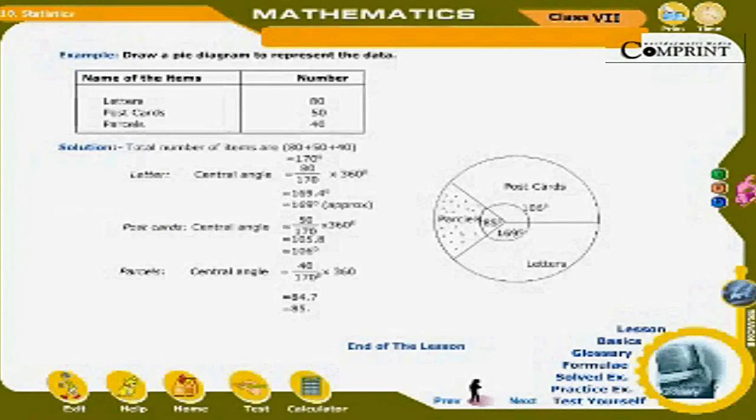Number of items: letters, 80; postcards, 50; parcel, 40. Total number of items are 80 plus 50 plus 40, which is equal to 170.